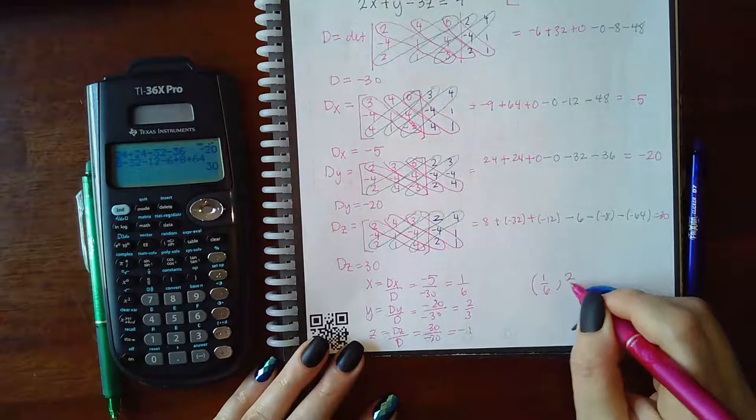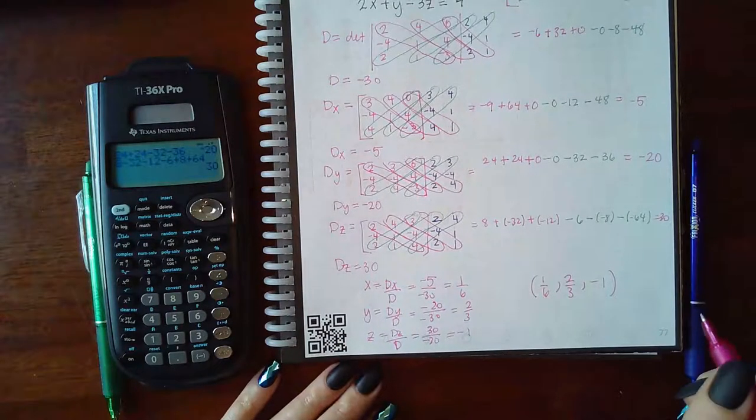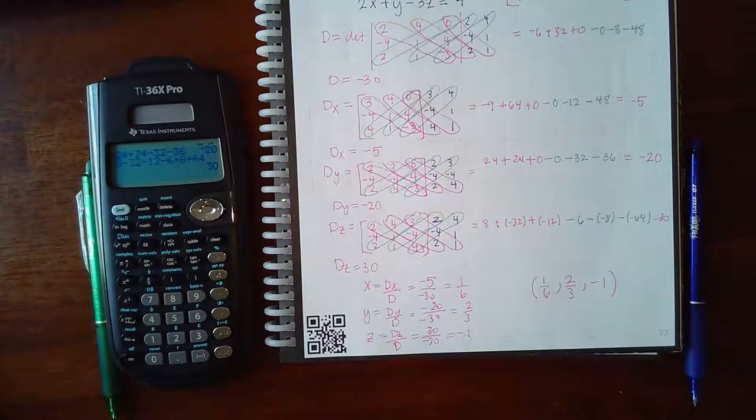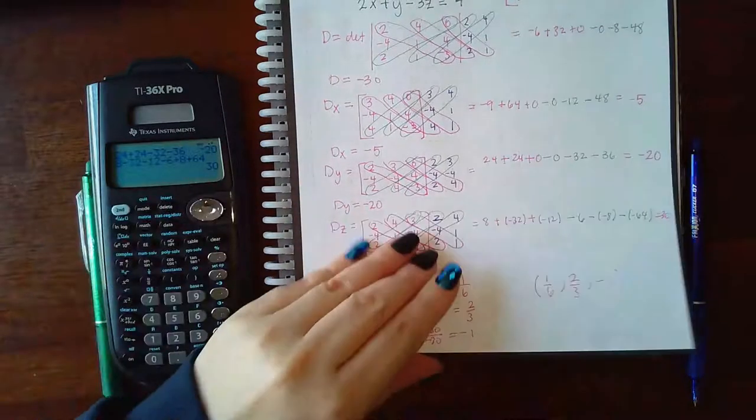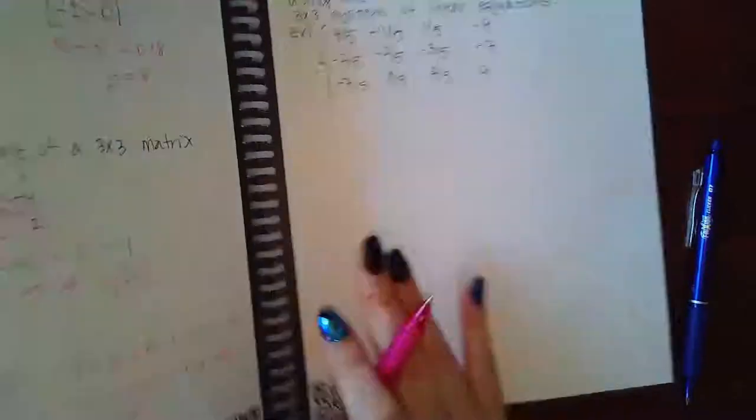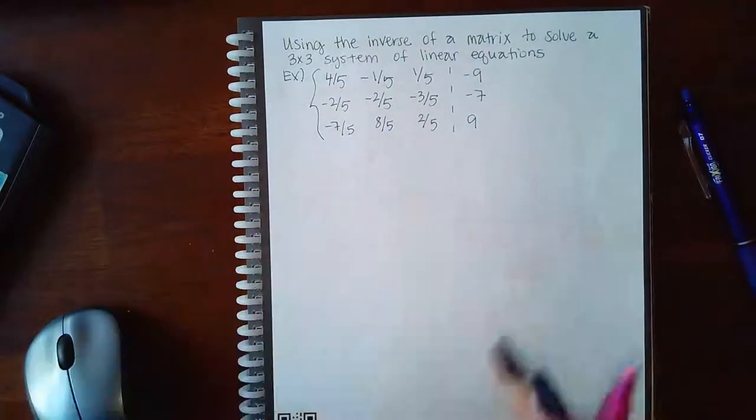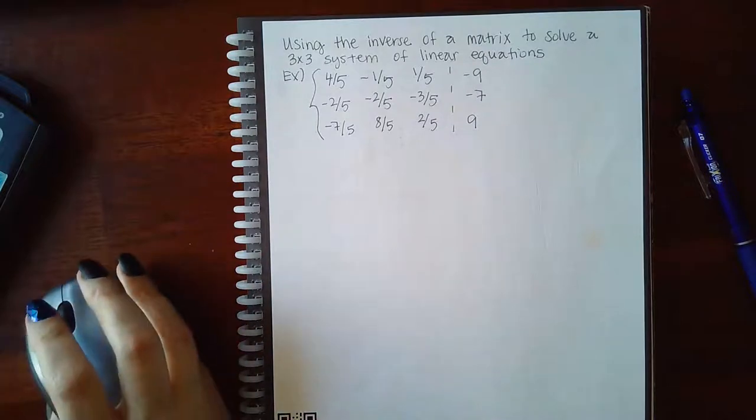So what is the solution? 1/6 for X, 2/3 for Y, and negative 1 for Z. Now in a separate video, I'm going to go back to solving the 3 by 3 using the inverse. Because we did kind of skip over that because I knew it was going to take a really long time to figure out. But I do think it's going to eat up too much time. So we'll do that in the third video.